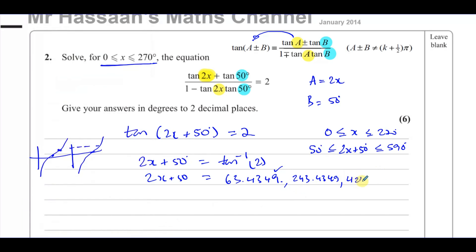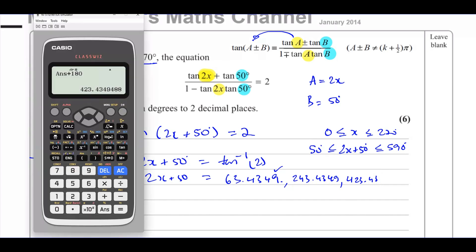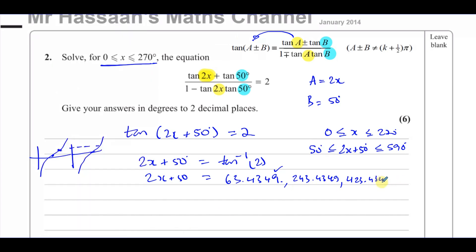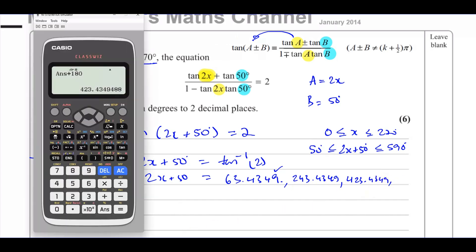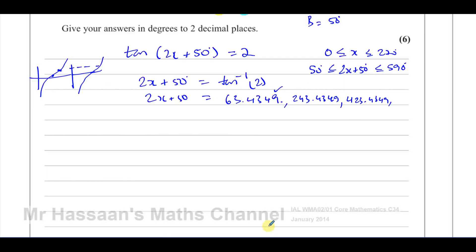423.4349. And then if we add another 180 to this, that takes us out of the range. So we have these three angles here. Now we want to find the value of x.